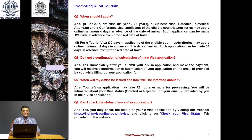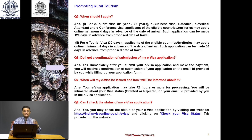When should I apply? For E-Tourist visa one year or five years, E-Business visa, E-Medical, E-Medical attendant, and E-Conference visa — applicants may apply online minimum four days in advance from the date of arrival, and up to 120 days in advance from the proposed date of travel. Ideally take the visa at least two months before your trip. For E-Tourist visa 30 days, applicants may apply minimum four days in advance — though I suggest one week before the date of arrival.